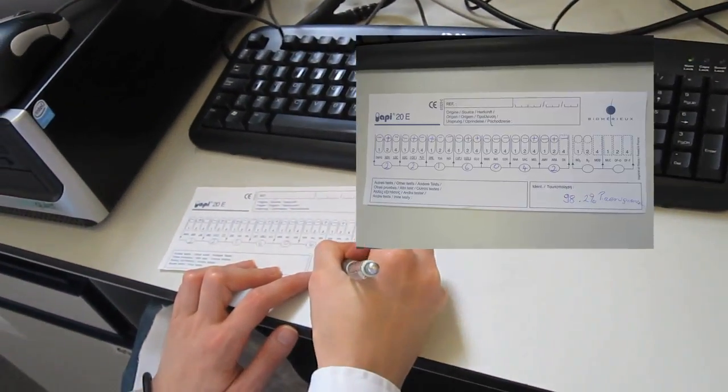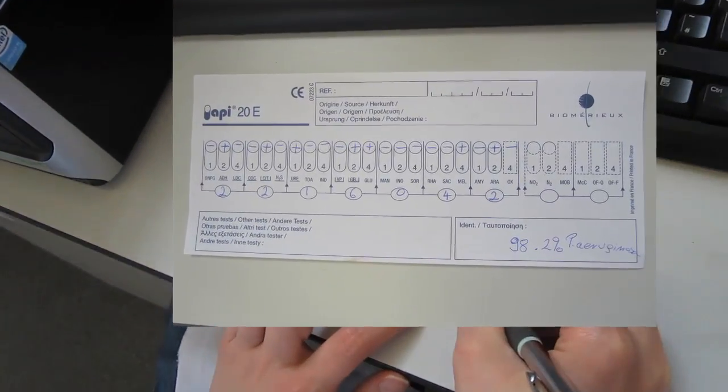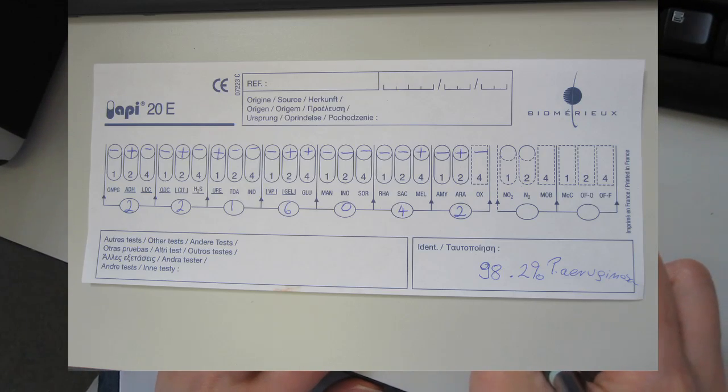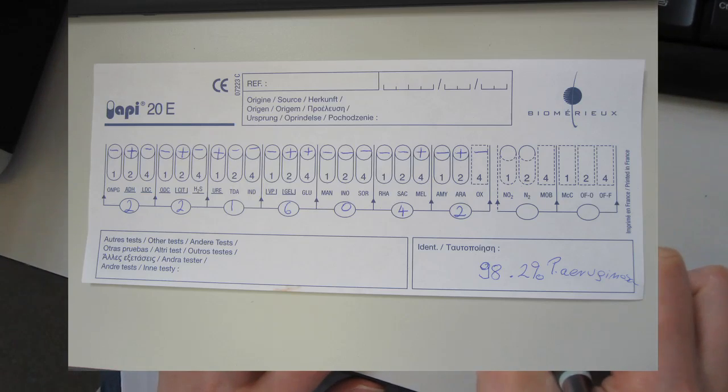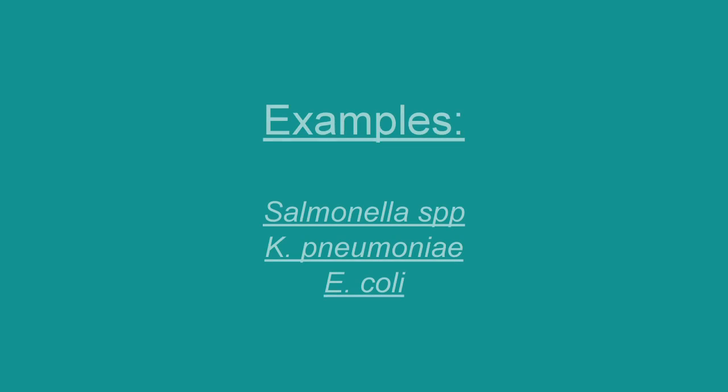The profile number 2-2-1-6-0-4-2 identified the unknown bacteria as Pseudomonas aeruginosa with 98.2% discrimination.